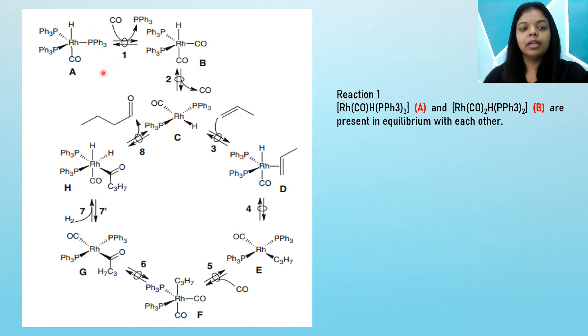Looking at reaction one here, we have compound A and also compound B, where compound A is carbonyl hydrido tristriphenylphosphine rhodium and compound B is dicarbonyl hydrido bistriphenylphosphine rhodium. These two compounds are present in equilibrium with each other.